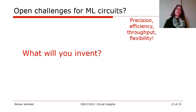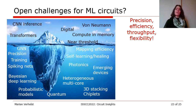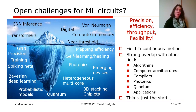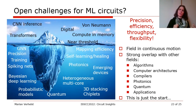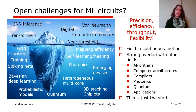We keep needing higher-precision compute, more energy efficiency, higher throughput, and increased flexibility for many types of machine learning models. This is just the tip of the iceberg. It's a field where we really have to combine expertise across different disciplines — algorithms, computer architectures, circuit design, and applications — and bring all that together to reach a jointly optimal solution.